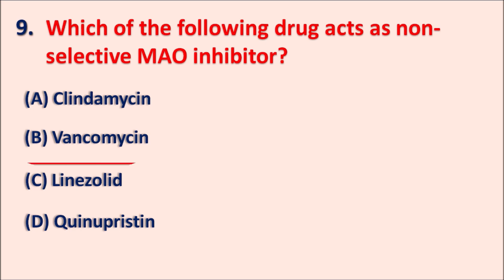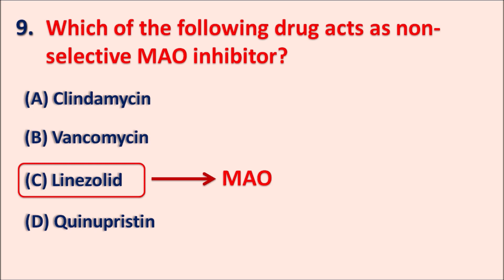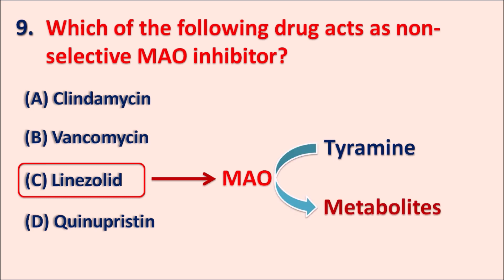The right answer is linezolid. Linezolid is a drug with weak MAO inhibitory activity, and because of inhibition of the MAO enzyme it can result in reactions like the cheese reaction. MAO enzymes, particularly MAO-B, are responsible for the metabolism of monoamines like tyramine. Tyramine is normally metabolized by the MAO enzyme to its metabolites.